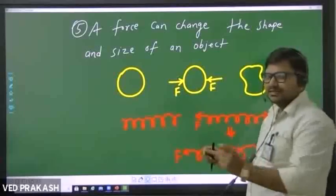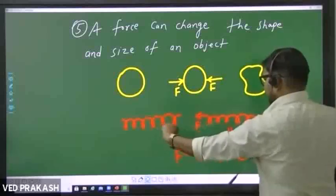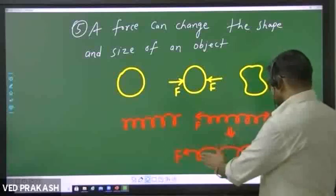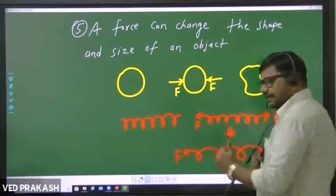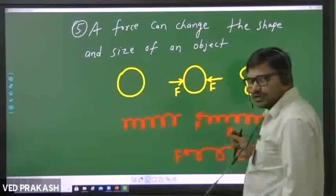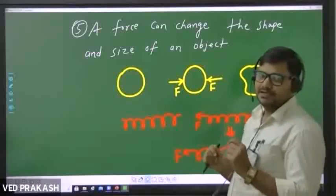This is a spring, which is at its natural length. If you try to apply force from both ends and try to elongate this spring, then its shape will change and it will become like this. Here the spring is at natural length and here it is elongated. A force can also change shape and size of any object.